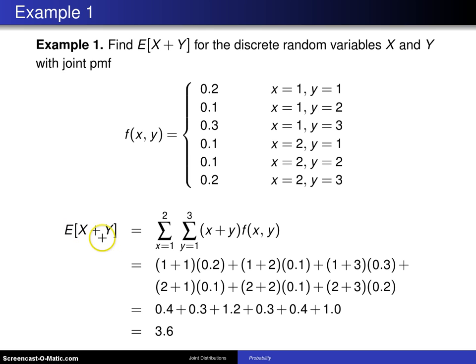So if we want the expected value of x plus y, that will be the double summation over the support of x plus y multiplied by the joint probability mass function. So that is going to be six different terms, so let's do a couple of them here.